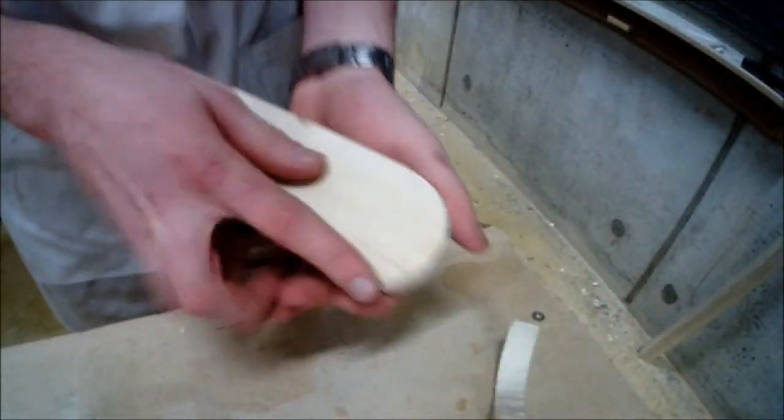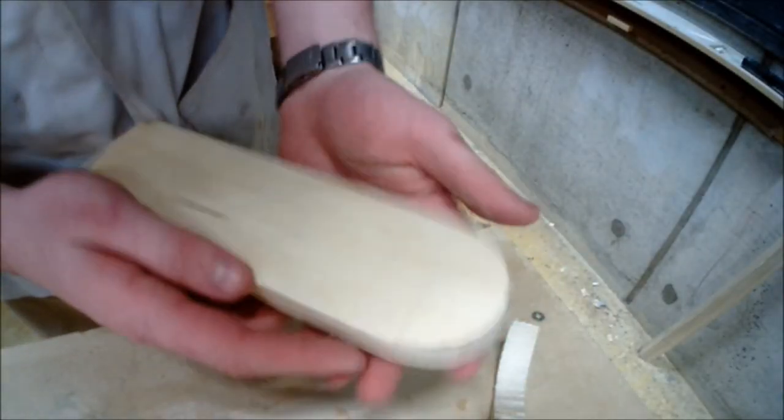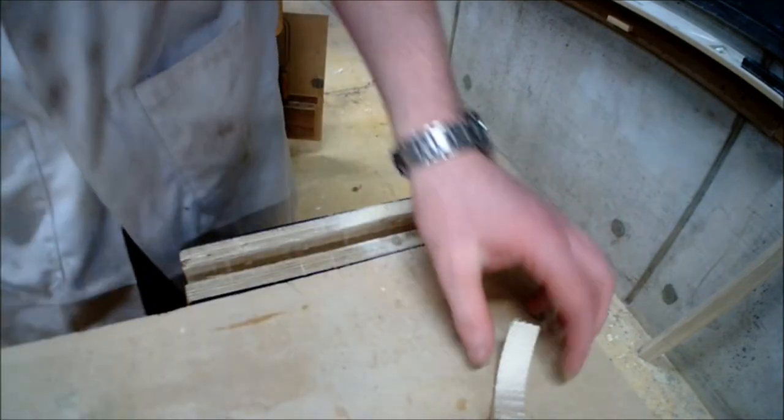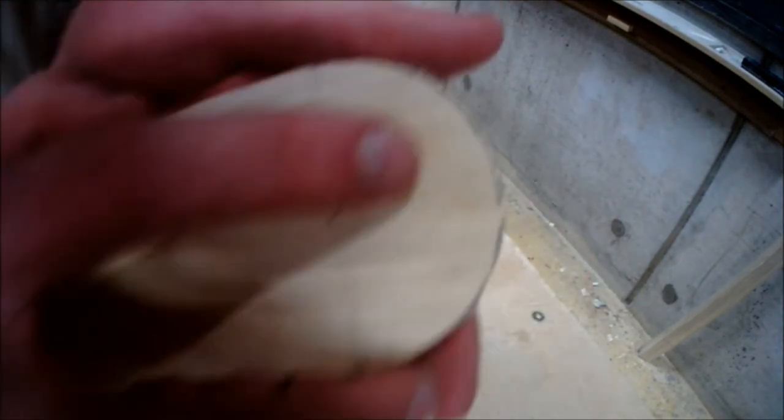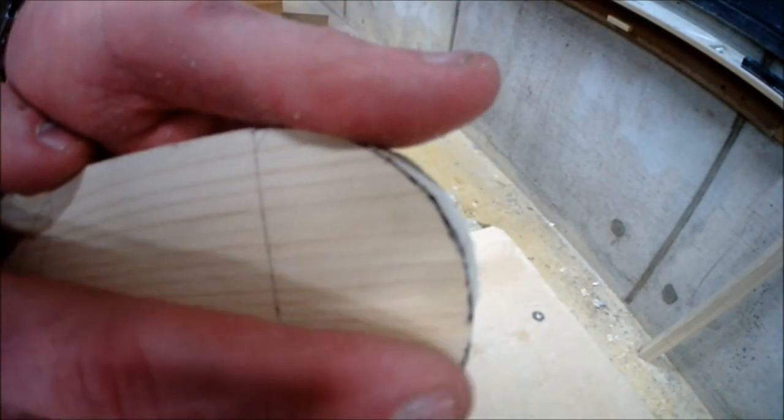Once completed, we can see our perfectly rounded edge which is one mil away from our marking line. This is to allow for smoothing out to ensure that our curve is perfectly circular or the shape in which we intended.